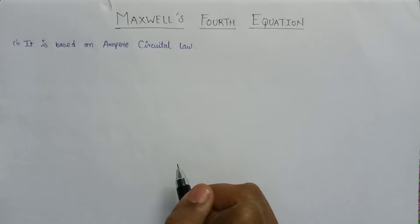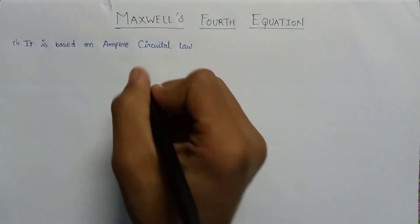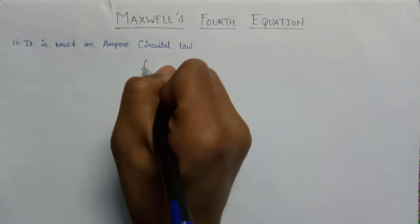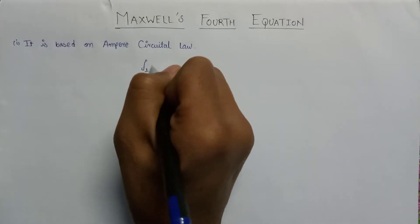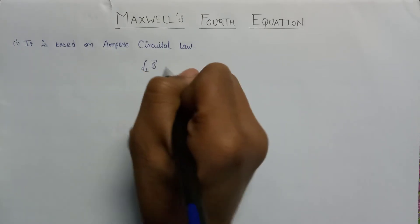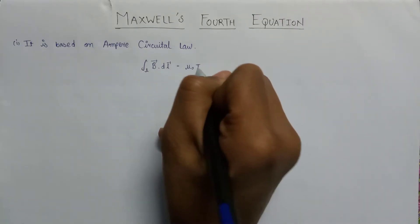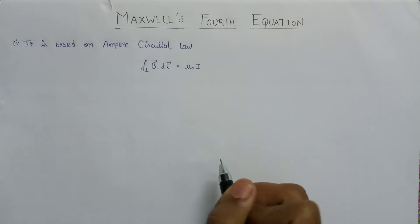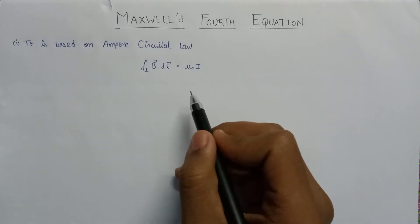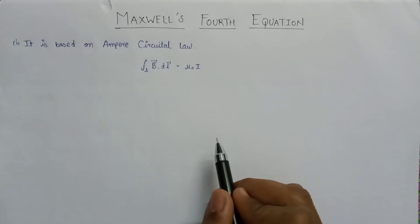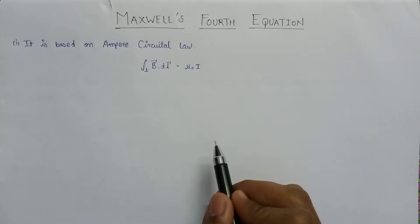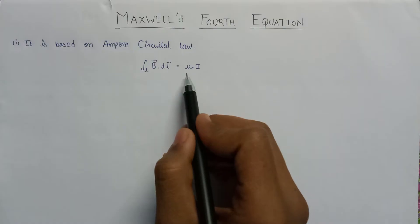Let us first discuss Ampere Circuital Law. If we write the mathematical expression for Ampere Circuital Law, according to it, the line integral of the magnetic field density along an imaginary closed path is equal to the product of the current enclosed by that path and the permeability of the medium.